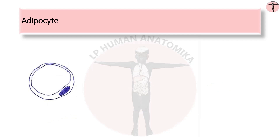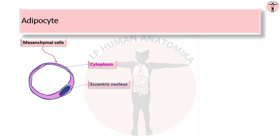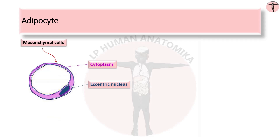The second type of connective tissue cells are adipocytes, also called fat cells, derived from mesenchymal cells. Specialized for cytoplasmic storage of lipid, helping in production of heat. They are spherical or polygonal, consisting of a peripheral rim of cytoplasm with an eccentric nucleus and a large central lobule of fat. When stained with H&E, during the process of preparing the slide, the fat lobule is dissolved and the central part is unstained, making cells look like a signet ring appearance. They can be present in isolation or in groups as adipose tissue.